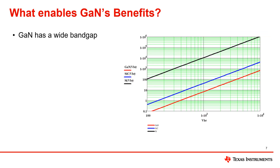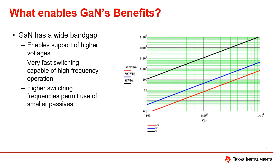One of the things that enables GaN to have an advantage over other technologies is its bandgap. GaN has a wide bandgap which is approximately three times greater than silicon's. The bandgap of a material is directly related to its breakdown field. With a higher breakdown field, a given voltage can be applied over a shorter distance. This enables the support of higher voltages, as well as higher frequencies for fast switching that can lead to the use of smaller passive components.